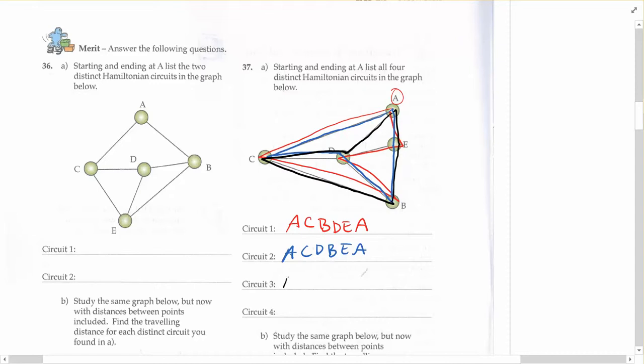So that's A, D, C, B, E, A. And again, I can tell it's distinct because I'm not tracing over any path that's already been done. I'm using different edges that haven't been covered before.